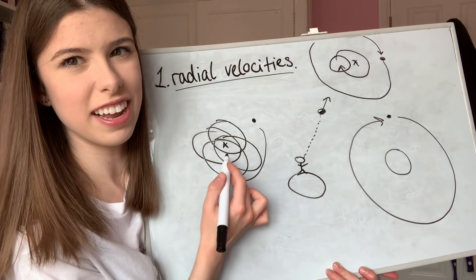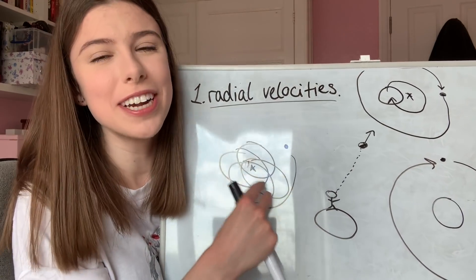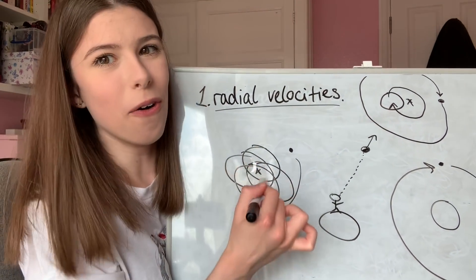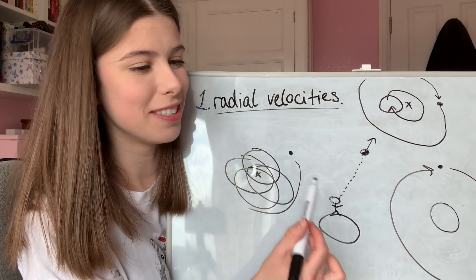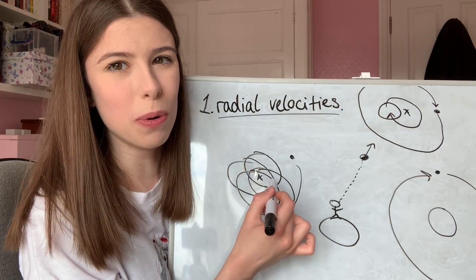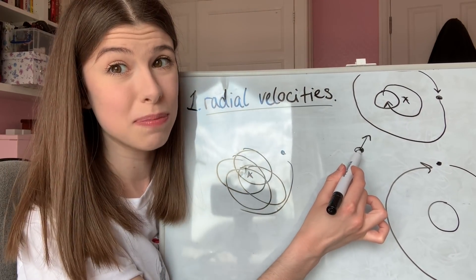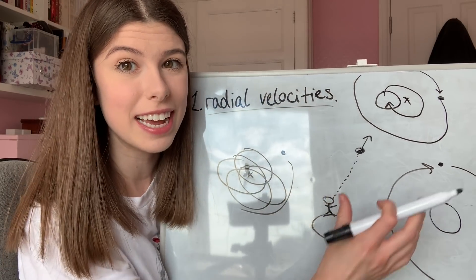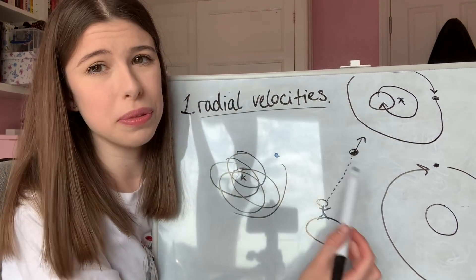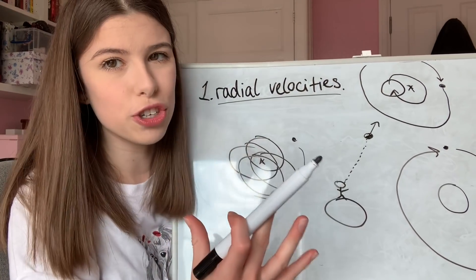You can tell I'm not an artist. Essentially, the star is not going to be fixed in position - it is wobbling, orbiting the center of mass of the system because of the presence of an exoplanet. This wobble is going to affect the star's radial velocity, which we can measure using features in the light we get from stars. If we view these periodic changes in a star's radial velocity, we can deduce the presence of a planet.